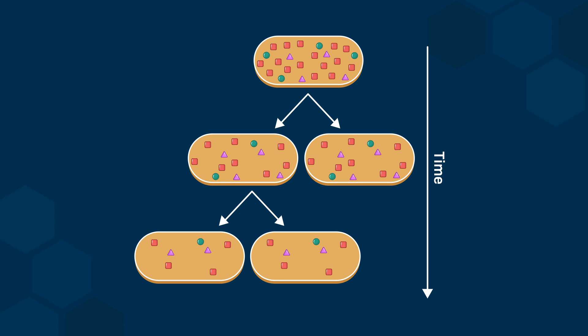Under optimal conditions for growth, the generation time for bacteria is 20 minutes. This means that a dramatic decrease of the protein concentration would occur within a few hours, and cell death would quickly follow.